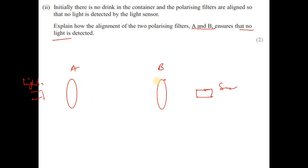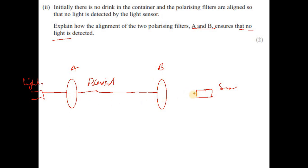When unpolarized light passes through filter A, it becomes plane-polarized. Filter A is then arranged so that its plane is perpendicular to the plane of filter B. When this polarized light reaches filter B, filter B absorbs all the light — so no light is detected. In other words, if A is vertical, B is horizontal, or vice versa.